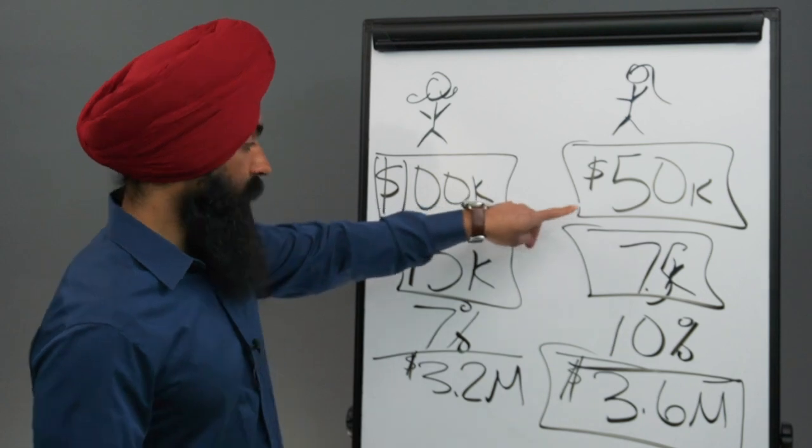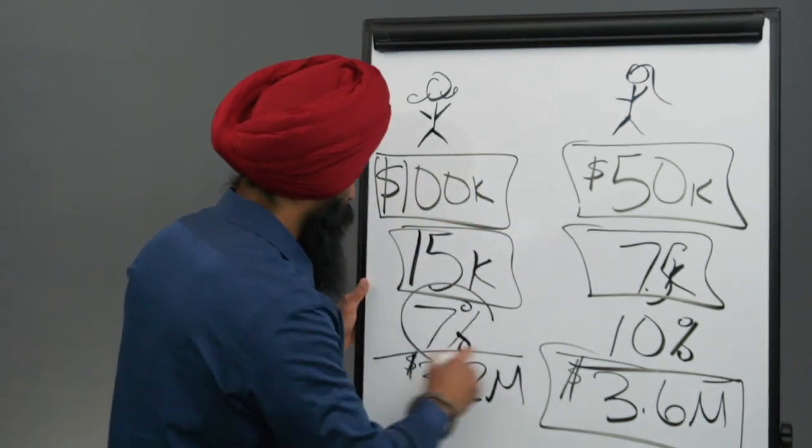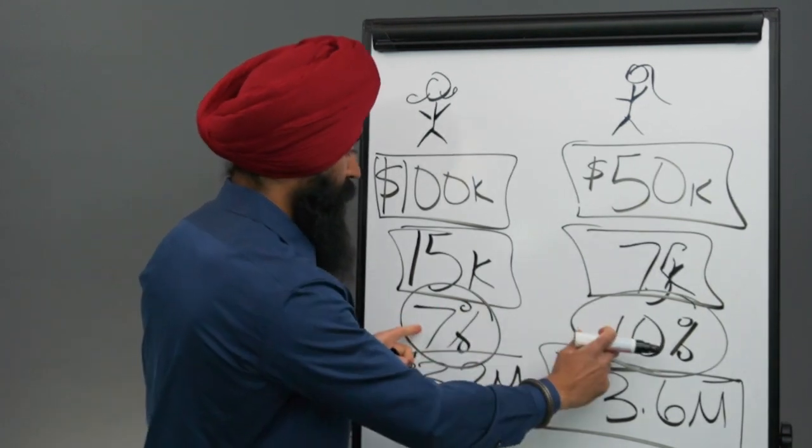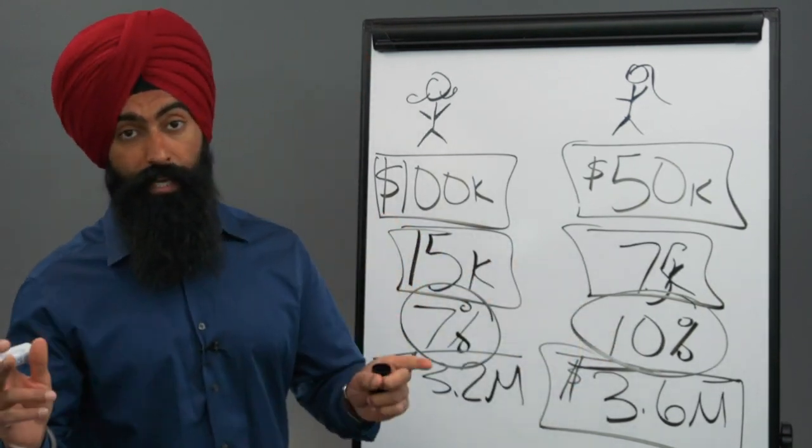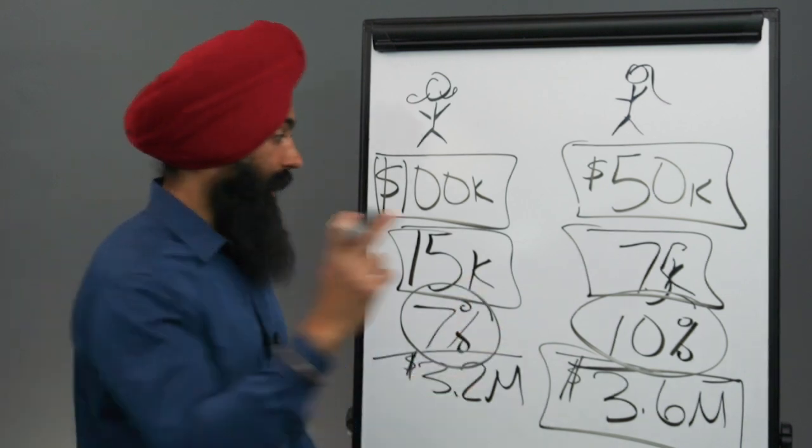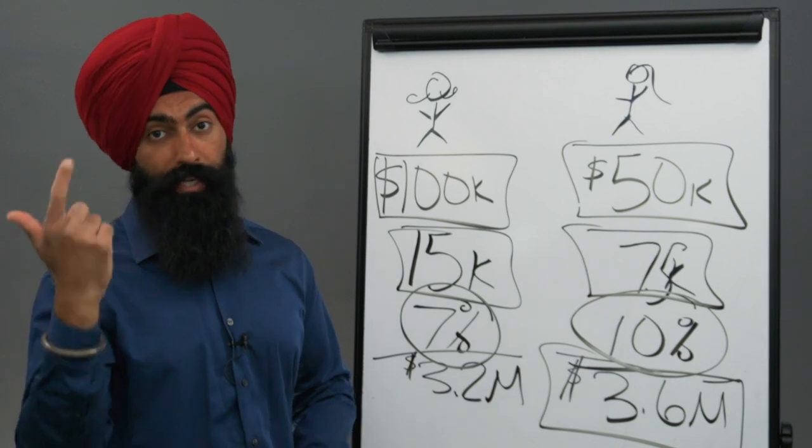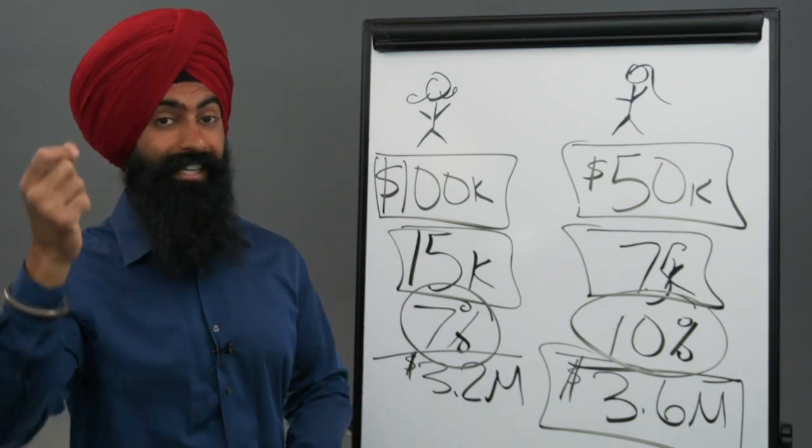Number one is how much money you earn. Number two is what do you do with that money once you earn it? What type of returns can you get? Because a higher return can significantly change how much wealth you get, and this higher return is going to depend on what fees you're paying and how much returns you can get, meaning how your financial education is going to impact your investments.